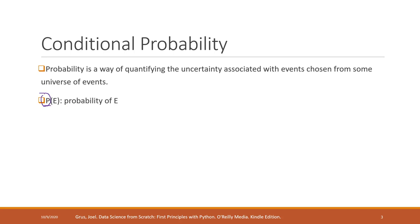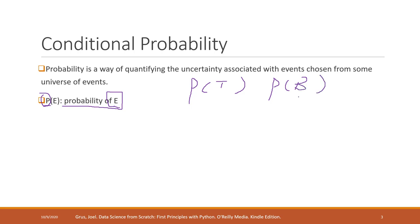P stands for the probability of a specific event happening. For example, considering who will win the election: P(Trump) is the probability that Trump will win the election, and P(Biden) is the probability that Biden will win the election. We know that those two probabilities together should equal one.